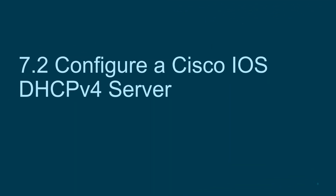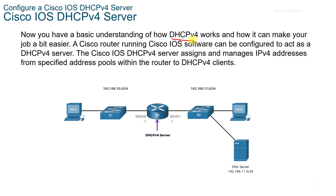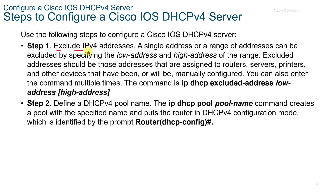7.2 Configure a Cisco IOS DHCPv4 server. A Cisco router running Cisco IOS software can be configured to act as a v4 server. The Cisco IOS DHCPv4 server assigns and manages IPv4 addresses from specified address pools within the router to v4 clients. In step one, we exclude any v4 addresses we need. A single address or range of addresses can be excluded by specifying the low address and the high address of the range.